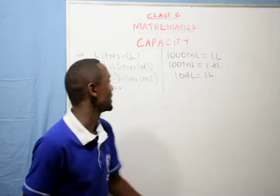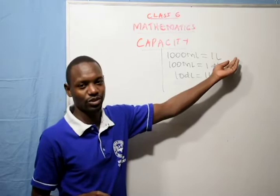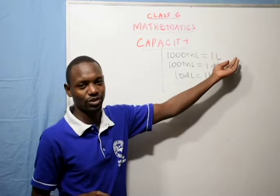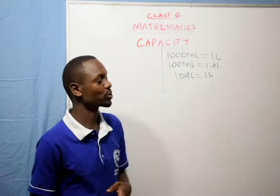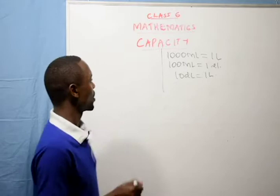Liters measure the largest amount of liquids. Deciliters measure small amounts of liquids, while milliliters measure the smallest amount of liquids — for example, small drops of medicine or water. So, how do we convert liters to milliliters?